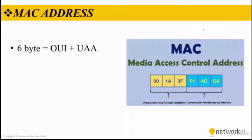Let's take a look at MAC addresses now. A MAC address of a computer, printer, or any network device is a six-byte unique identifier assigned to network interfaces for communications at the data link layer of a network segment. MAC addresses are used as a network address for most IEEE network technologies including Ethernet and Wi-Fi, and are used in the media access control protocol sublayer of the OSI model. An organizationally unique identifier (OUI) is a 24-bit number that uniquely identifies a vendor, manufacturer, or other organization, and it forms the first portion of the MAC address.